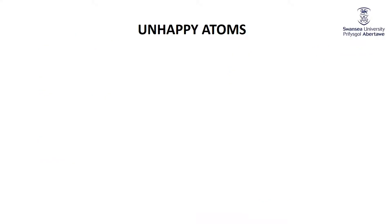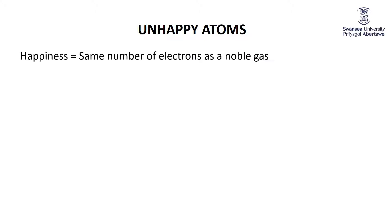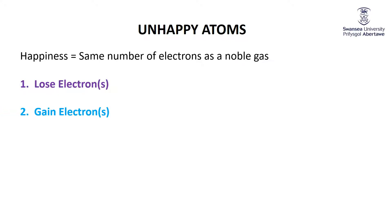Fundamentally, atoms are unhappy. The only happy atoms are the noble gases, so atoms try to become like noble gases. They can't change what's in their nucleus, but they can affect the number of electrons. Happiness is defined as having the same number of electrons as a noble gas. There are three main ways atoms can do this: they can lose one or more electrons, they can gain one or more electrons, or they can share one or more electrons.